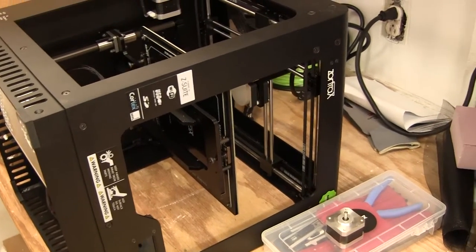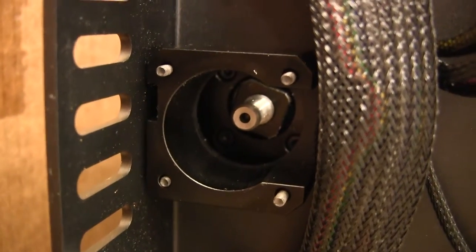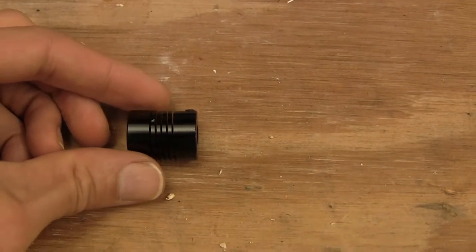We were having some problems with the Zortrax Z-axis. It wasn't working anymore. So we removed the Z-axis motor, which was down here, and took out the coupler. It turns out that the coupler was broken.